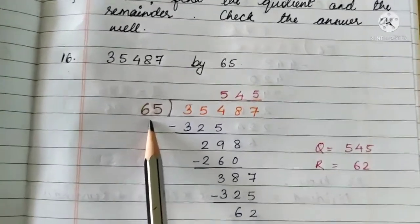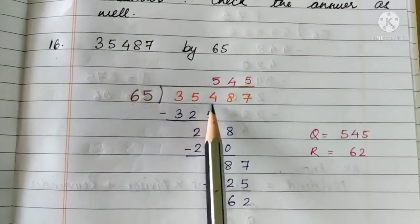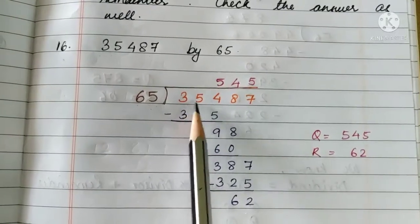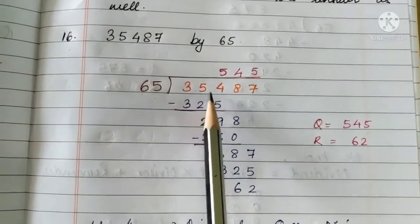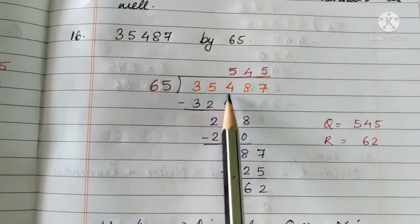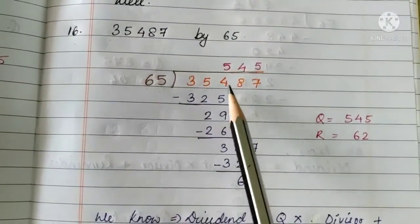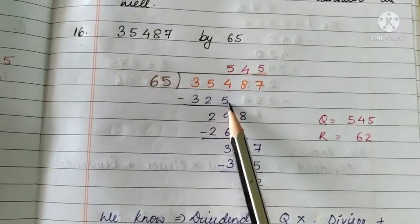So what are we going to do? We will take another digit. That is, along with 35, we will take 4 as well. So it becomes 354. Now, this number is greater than 65, so we can start the division here.